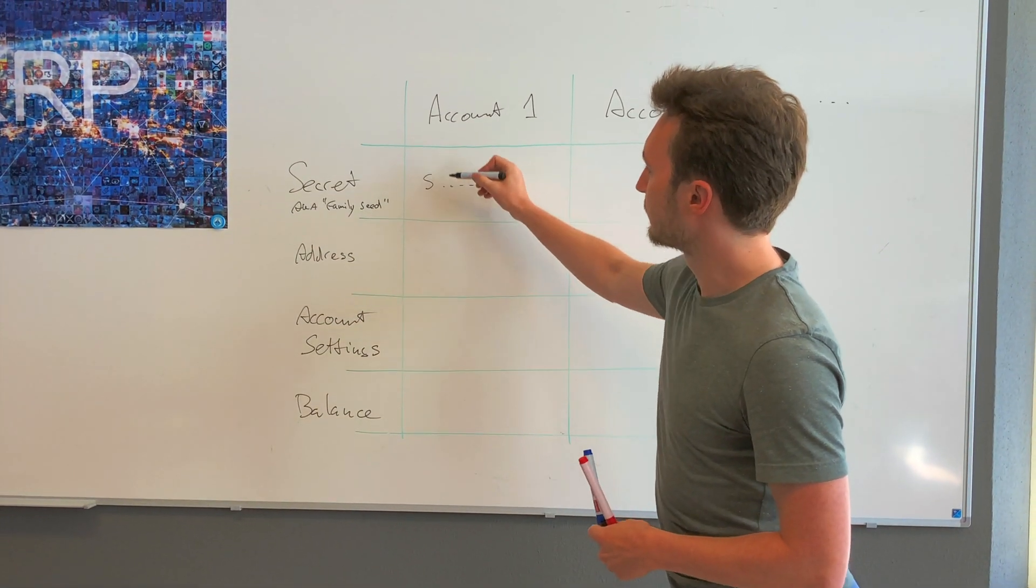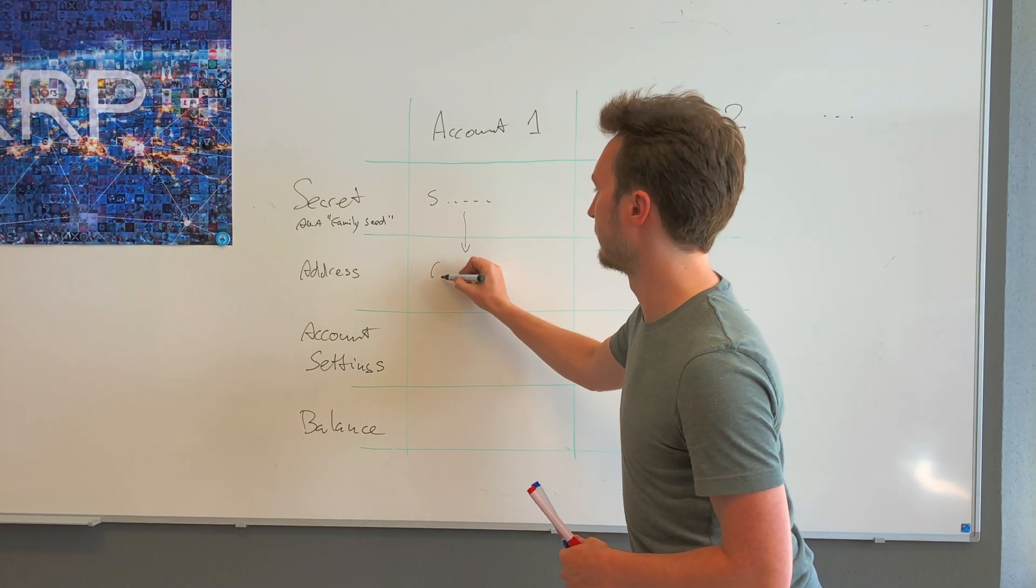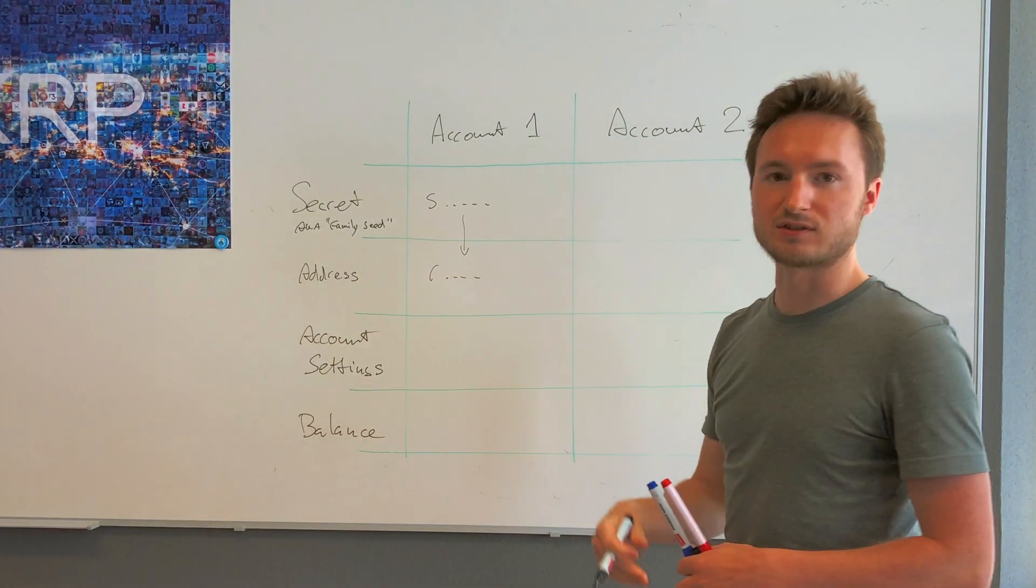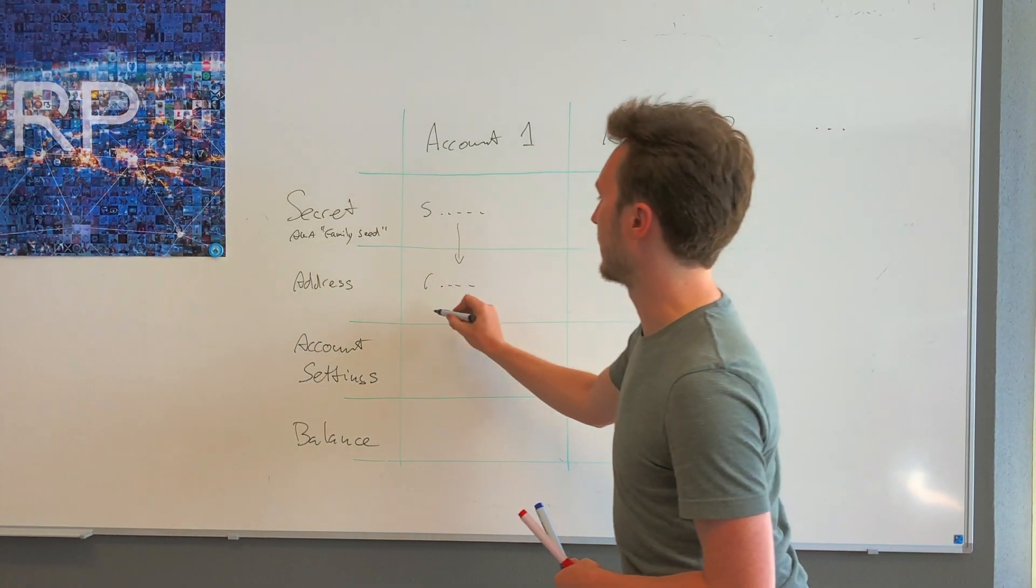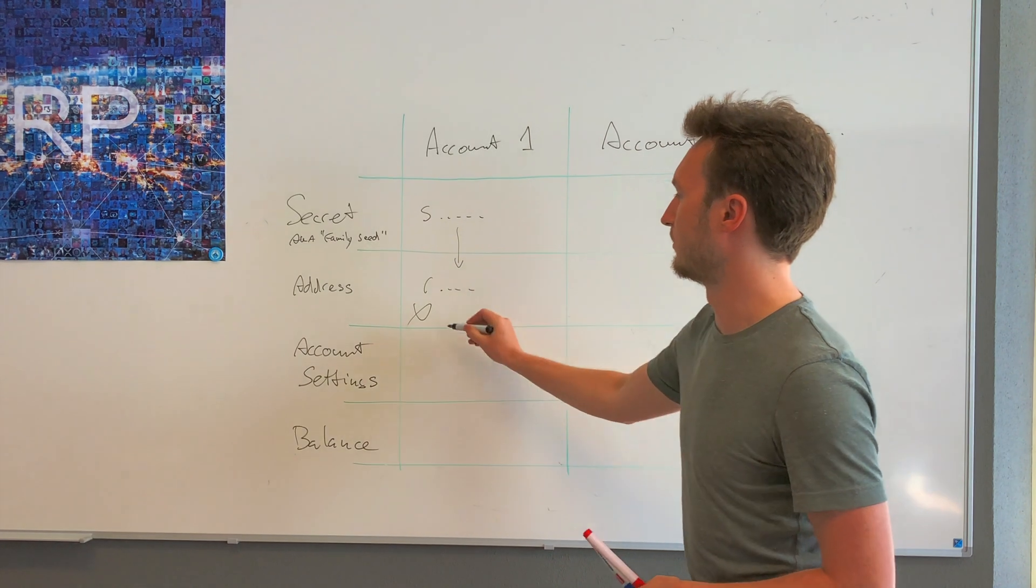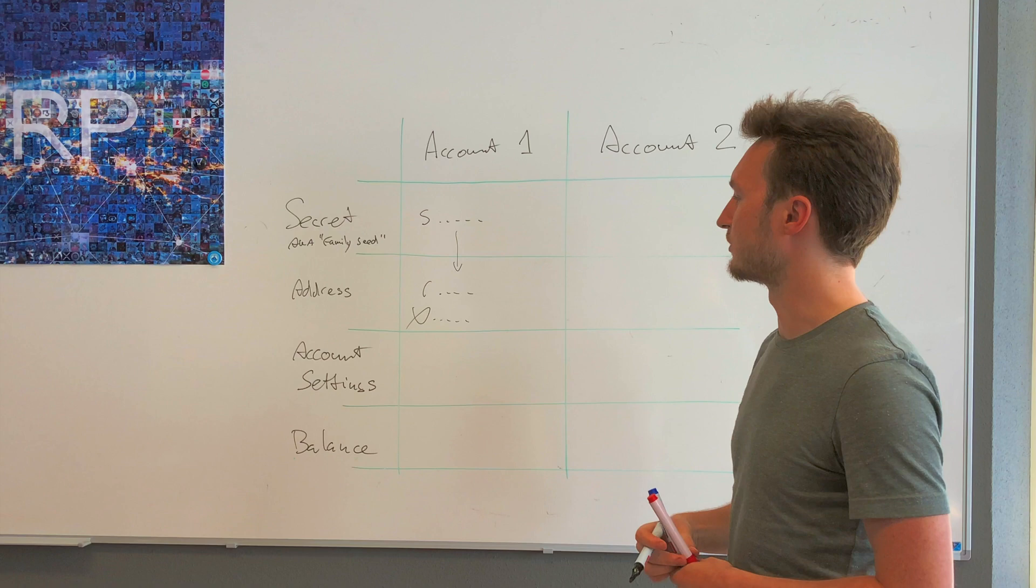Your secret derives to your account address, which starts with a lowercase 'r'. That's actually where you transfer your XRP to. These days it can be an uppercase 'X' as well, but you don't see them very often right now. May change in the future.